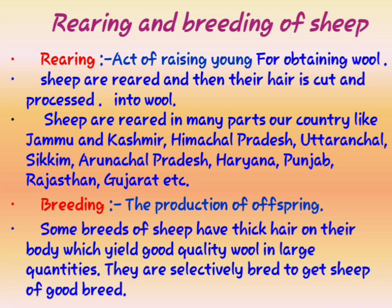Sheep are reared and then their hair is cut and processed into wool. If we rear sheep properly — providing good food, good hygienic conditions — our sheep will grow well and produce a good amount of wool. Just like our hair grows well when we eat proper diet with protein, vitamins and minerals, sheep also need good food. You have to protect your sheep from diseases and severe climatic conditions. That is how we rear the sheep.